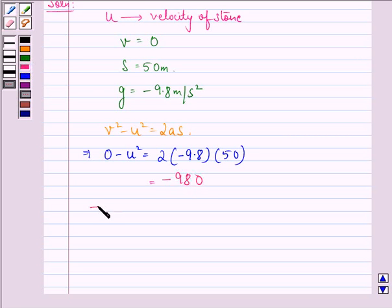So this implies that u² is equal to 980, and this implies that u is equal to √980 meter per second. That is equal to 14√5 meter per second.